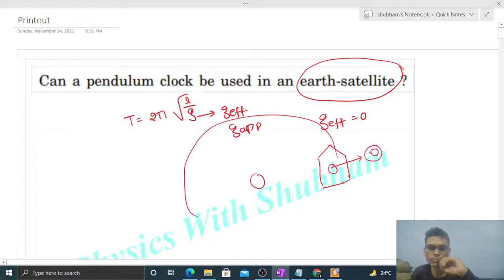...that will be zero. This is the condition of weightlessness. Why? Because the gravitational force of attraction by the earth on this body will be used to provide the centripetal acceleration to the body. That's why the effective weight or apparent weight of the body will be zero.